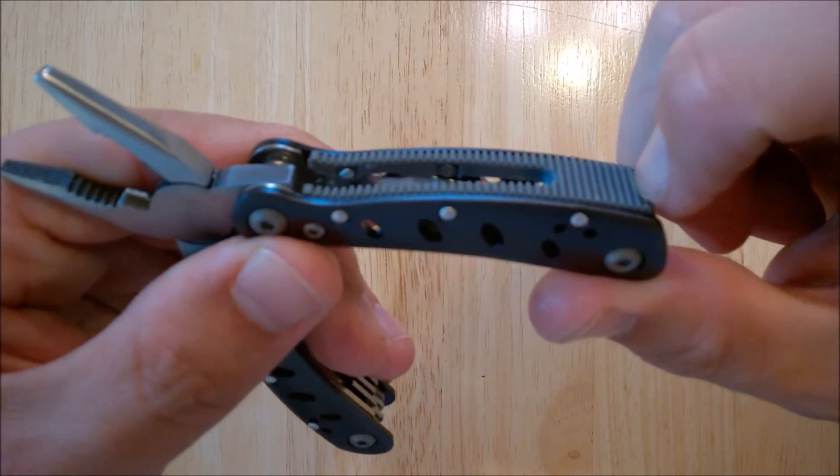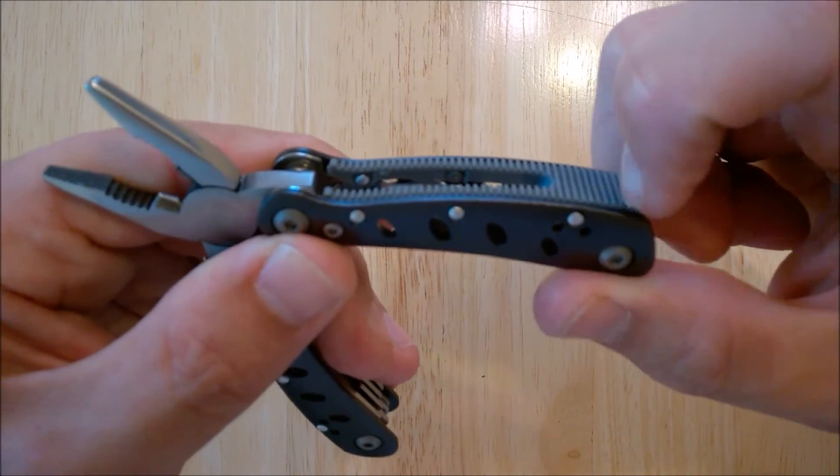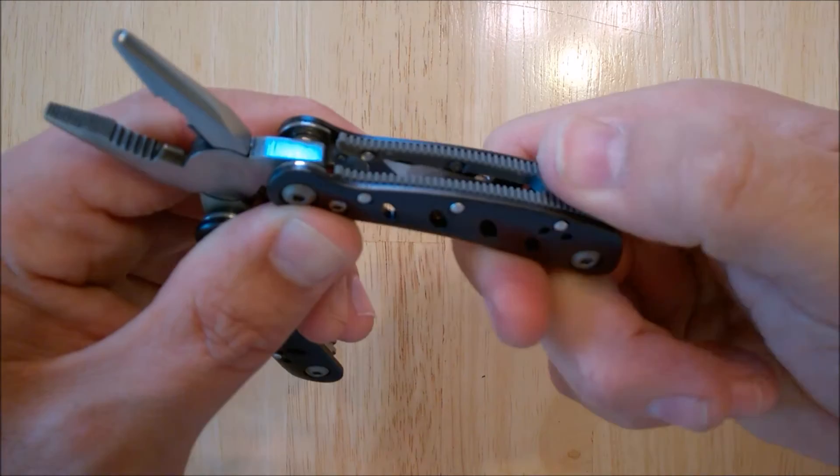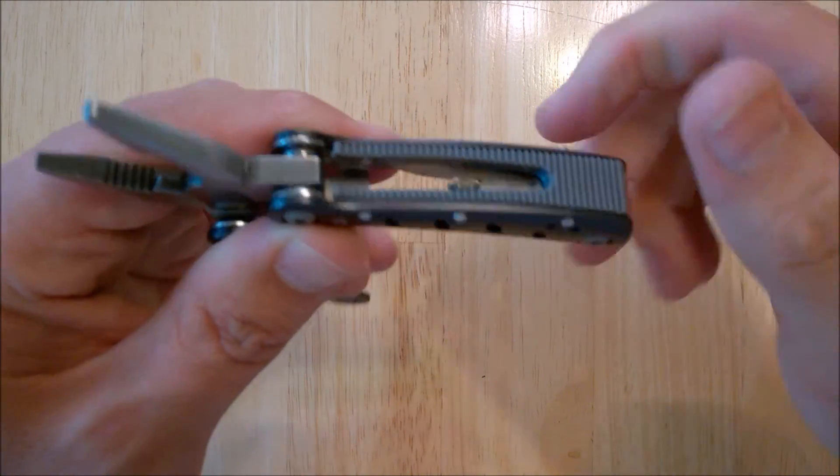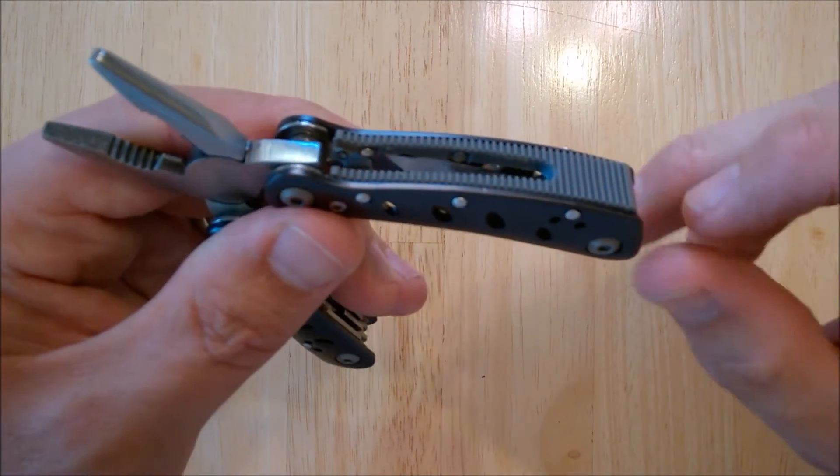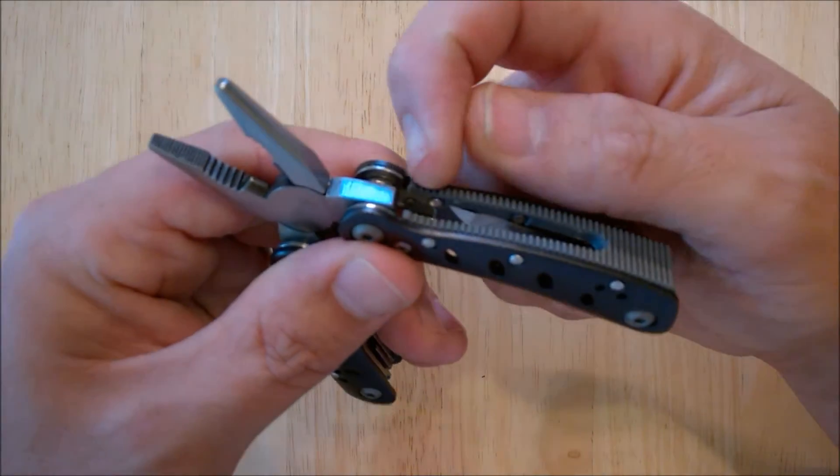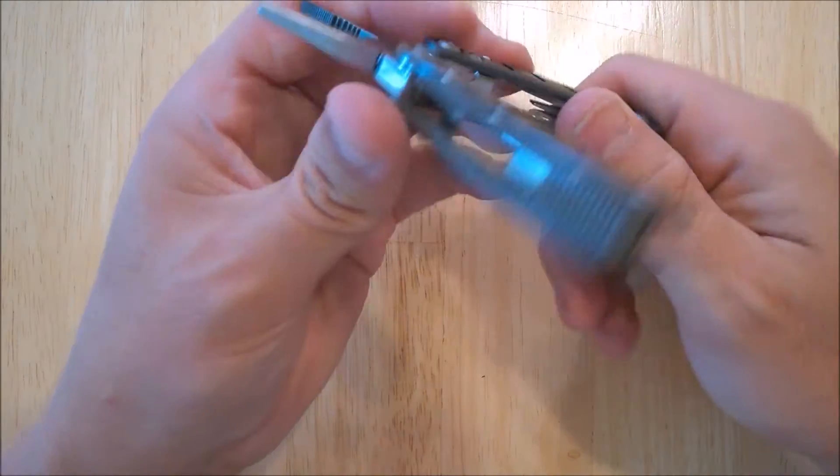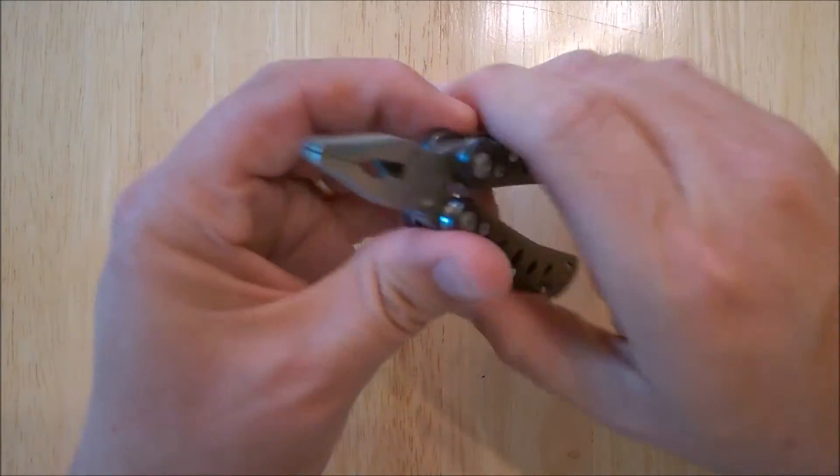You've got this hard plastic, it's not rubbery like it looks like it would be, but it does give a little bit for your traction. So it looks like some nice fine jimping all the way up with a hole in the middle to make it easy to clean.